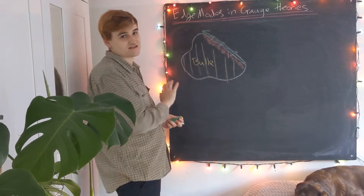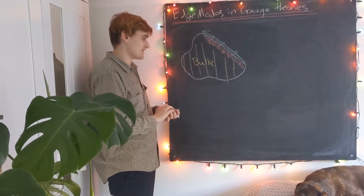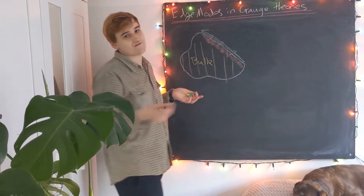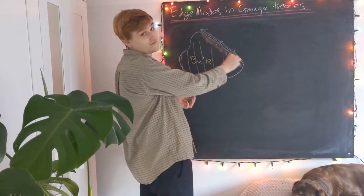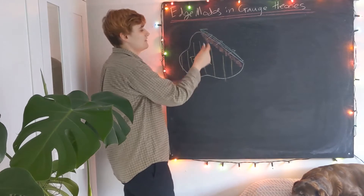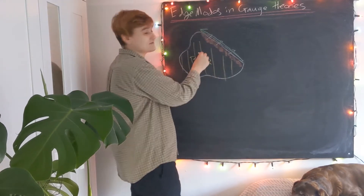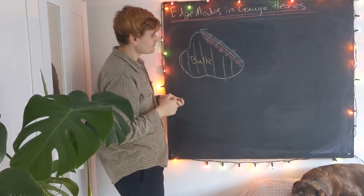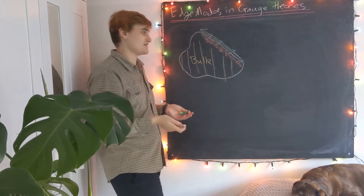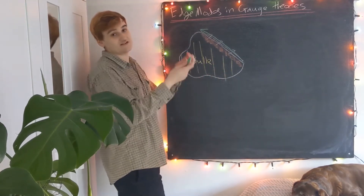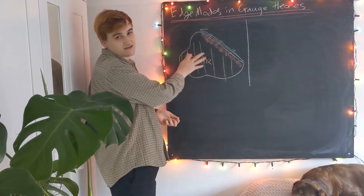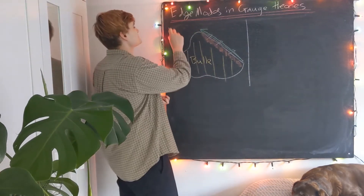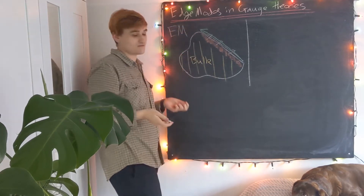This is obviously just a schematic picture — I haven't gone through the full details of the electromagnetism, but hopefully the idea is clear. Standard theories don't know about boundaries. When we introduce a physical boundary, obviously the physics at the boundary is going to be different than in the bulk, by virtue of this discontinuity across the boundary. To compensate for this, we need to add something new to the theory, which is an edge mode. That was the first place where we realized we needed edge modes — in classical electromagnetism.